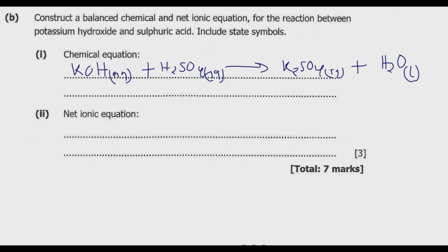On the left we have one potassium, on the right we have two, so we place a 2 in front of KOH. That gives two potassium each side. Checking oxygen: left side 2 + 4 = 6; right side with a 2 in front of water gives 4 + 2 = 6 — balanced. Hydrogen: left 2×1 + 2 = 4; right 2×2 = 4 — balanced. Sulfur: 1 each side — balanced.